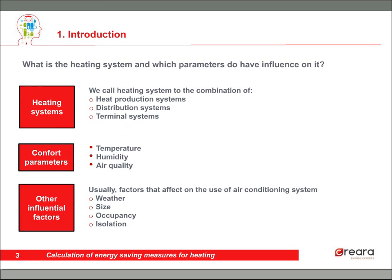Let's begin. As we talked in the last webinar, we're going to talk about the heating system now. Just to remind you which parameters have influence on heating systems: the comfort parameters, such as temperature, humidity, or air quality, and other influential factors such as weather, size, occupancy, and insulation. Those all imply differences in energy performance in the three main systems: heat production systems, distribution systems, and terminal systems.